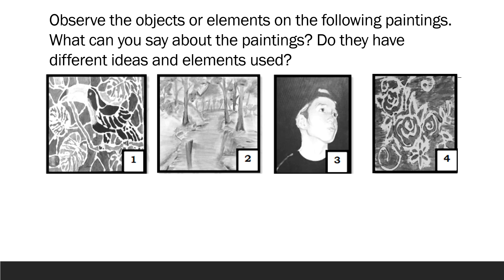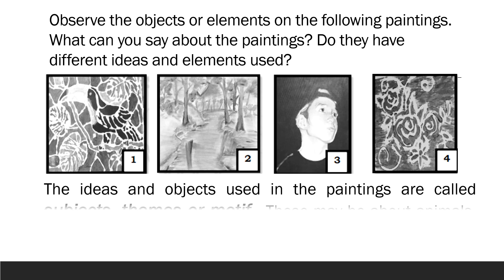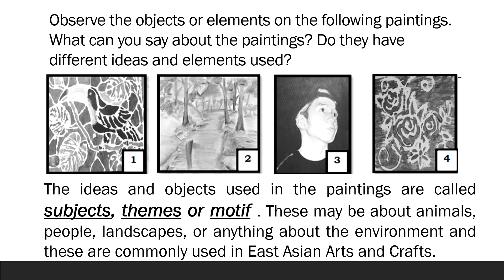Observe the objects or elements on the following paintings. What can you say about the paintings? Do they have different ideas and elements used? The ideas and objects used in the paintings are called subjects, themes, or motives. These may be about animals, peoples, landscapes, or anything about the environment, and these are commonly used in East Asian arts and crafts.